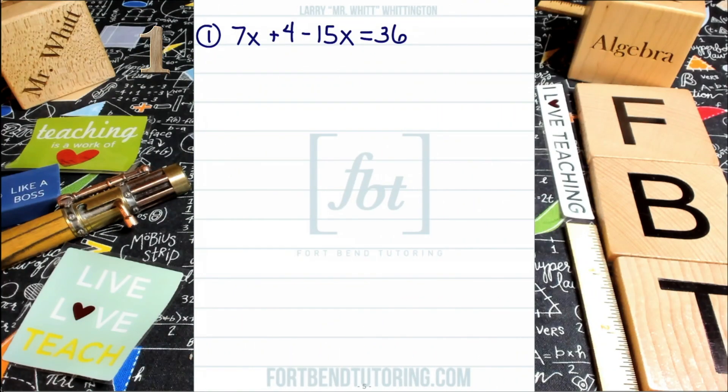So we have problem number one, where we have 7x + 4 - 15x = 36. In this problem, your first step is to analyze what is going on on the left and right sides of your equation, while at the same time paying attention to which terms have the variable that you're trying to solve for. Notice that our first and third term on the left side of the equation contain the variable x.